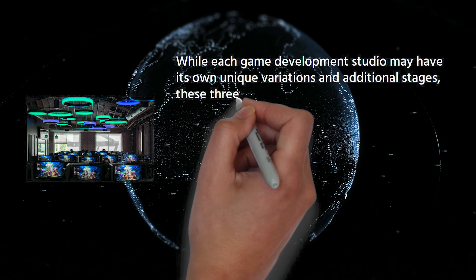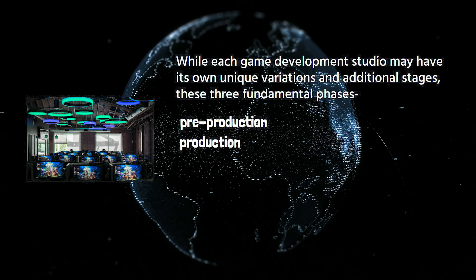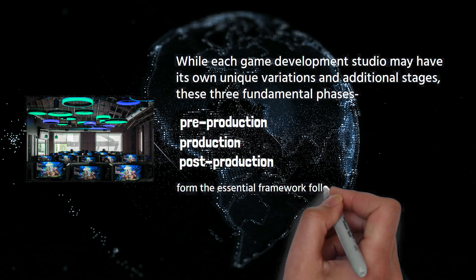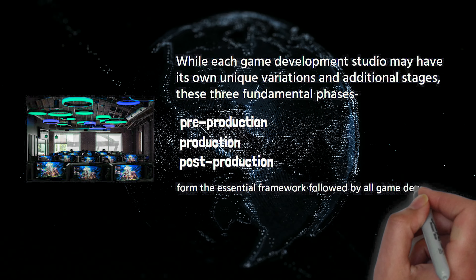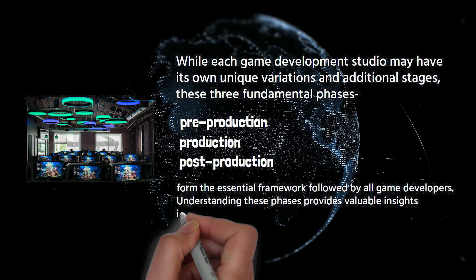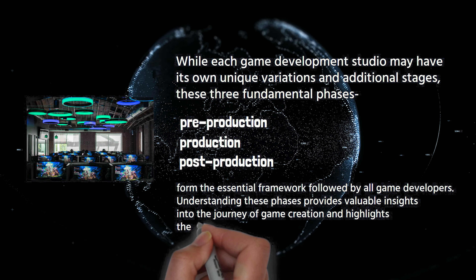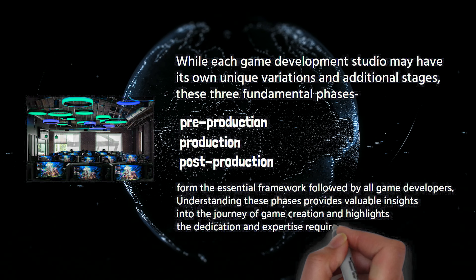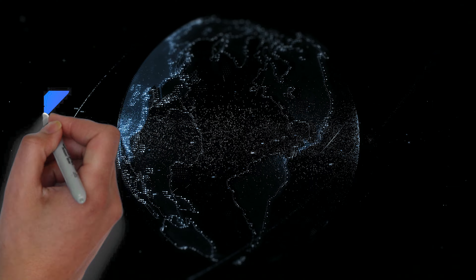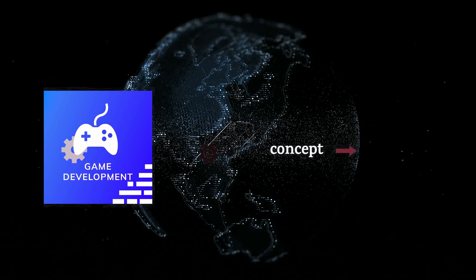While each game development studio may have its own unique variations and additional stages, these three fundamental phases — pre-production, production, and post-production — form the essential framework followed by all game developers. Understanding these phases provides valuable insights into the journey of game creation and highlights the dedication and expertise required to bring a game to life.